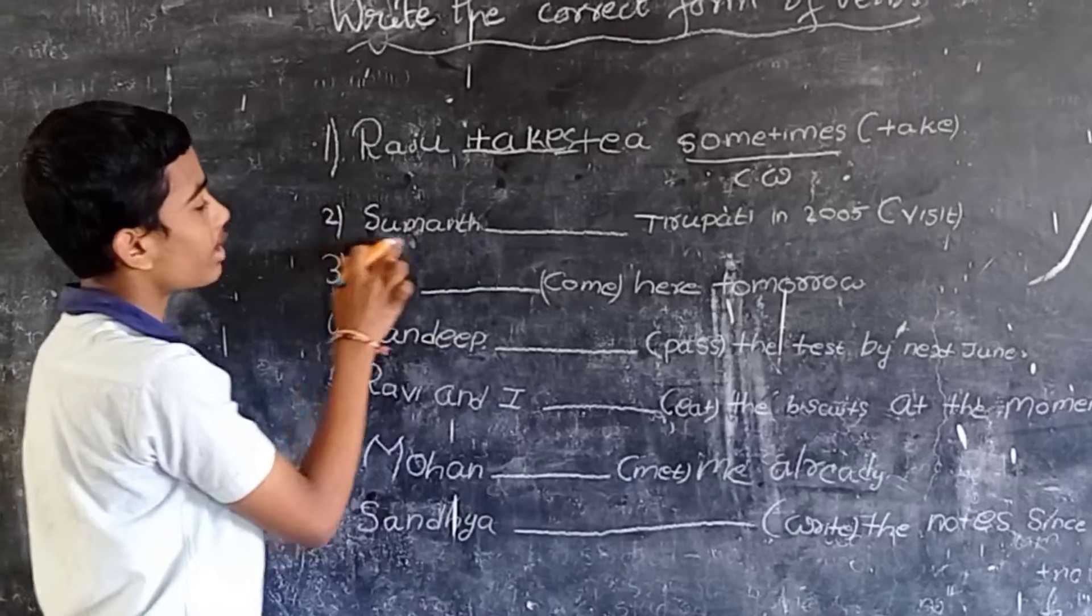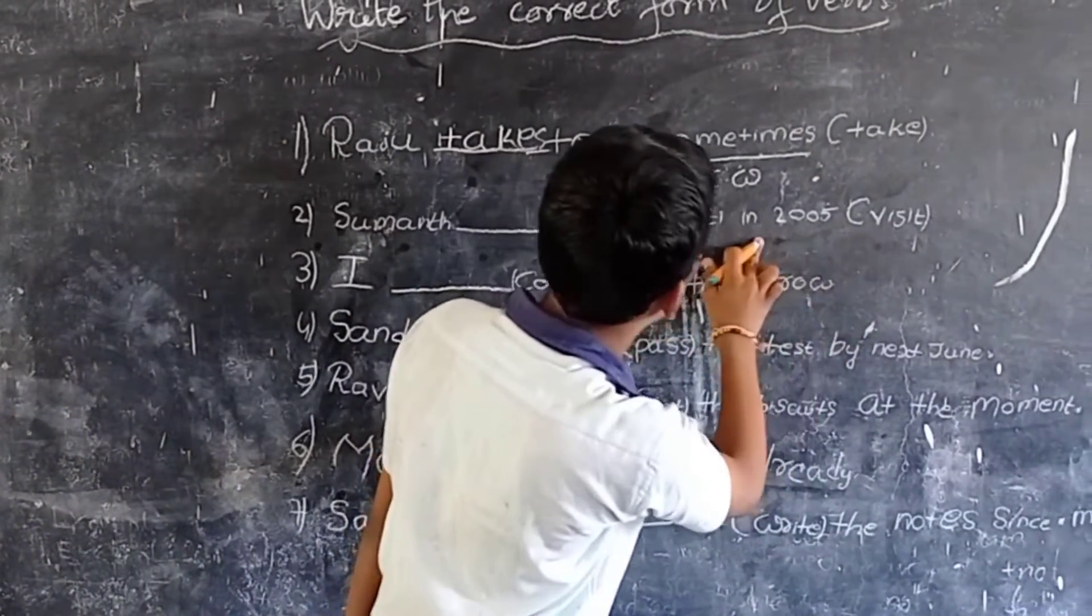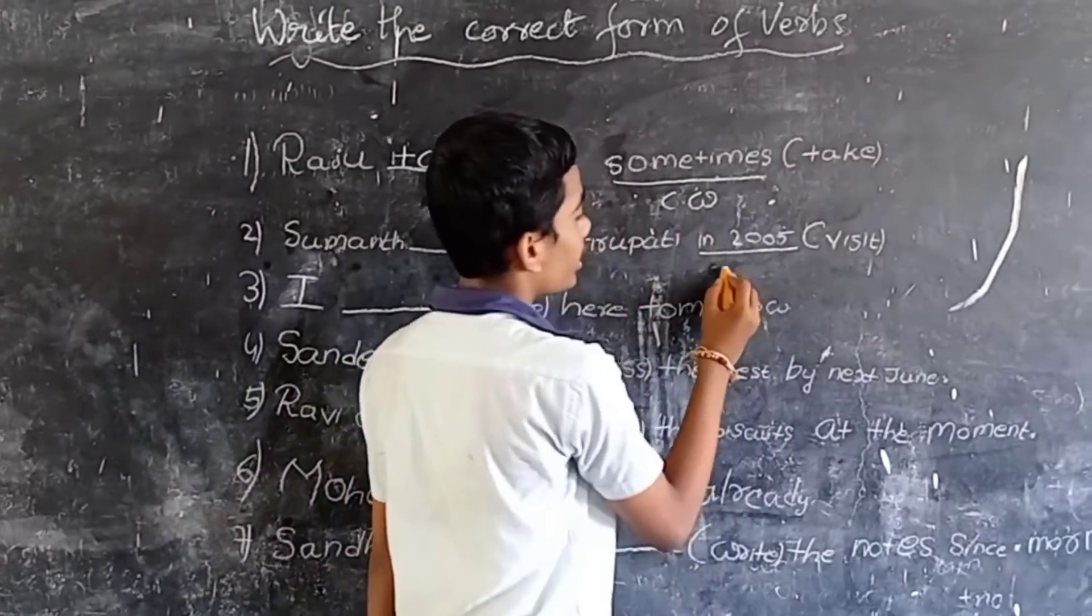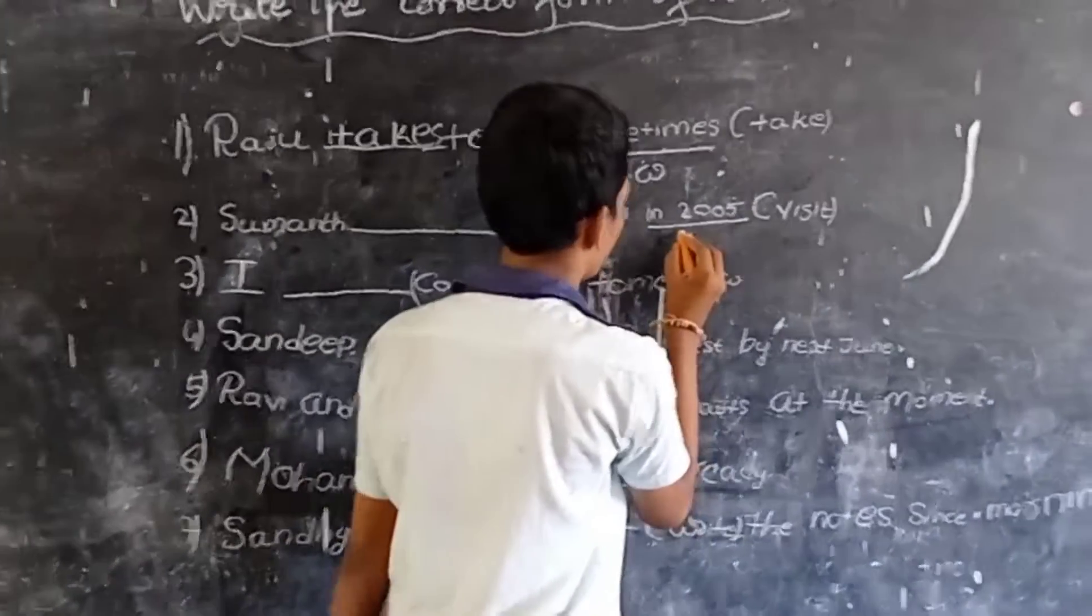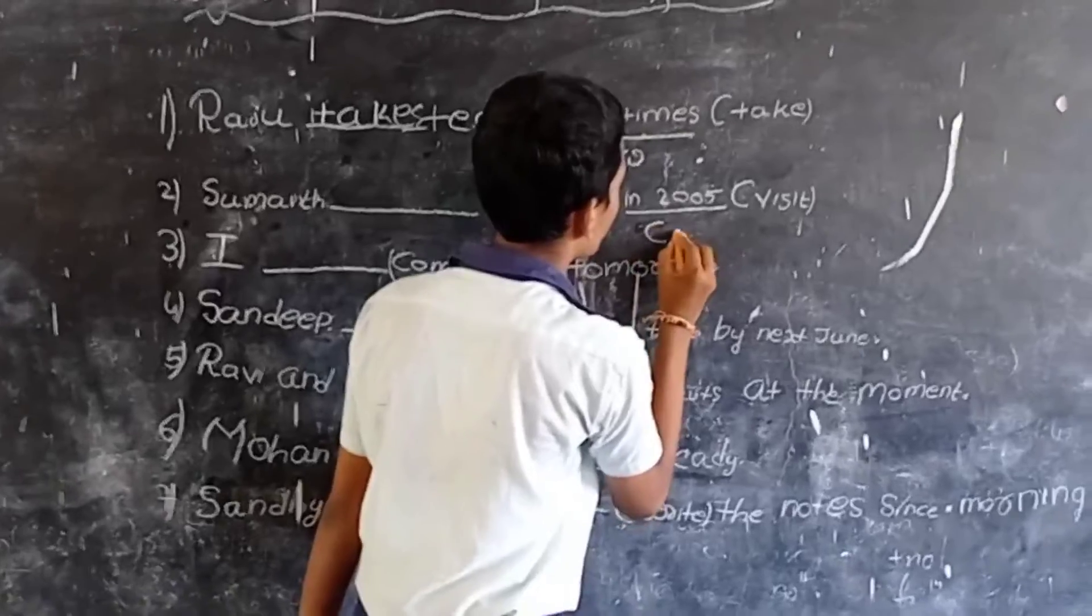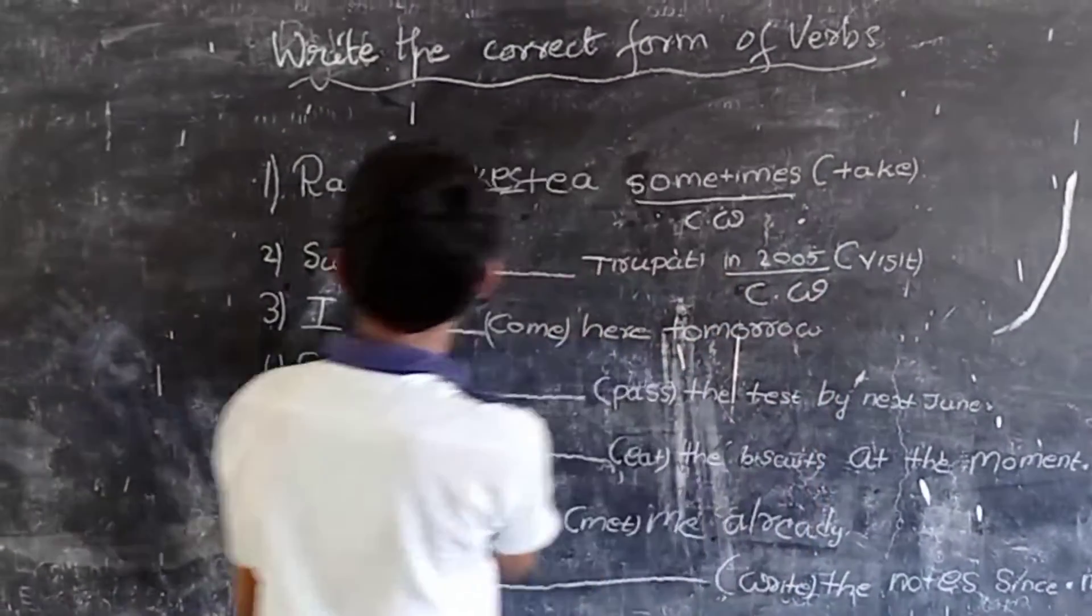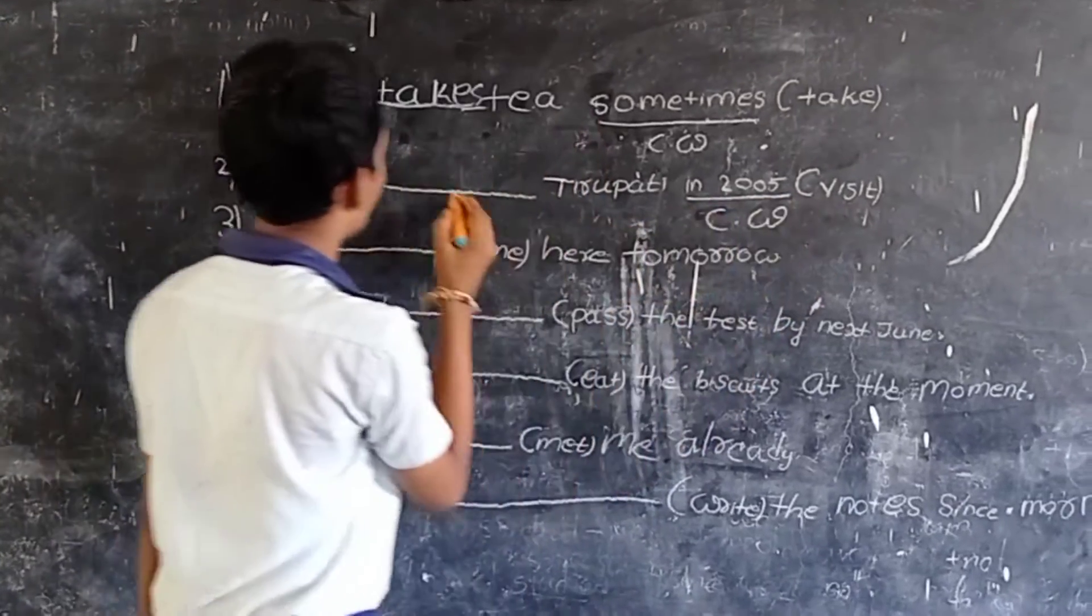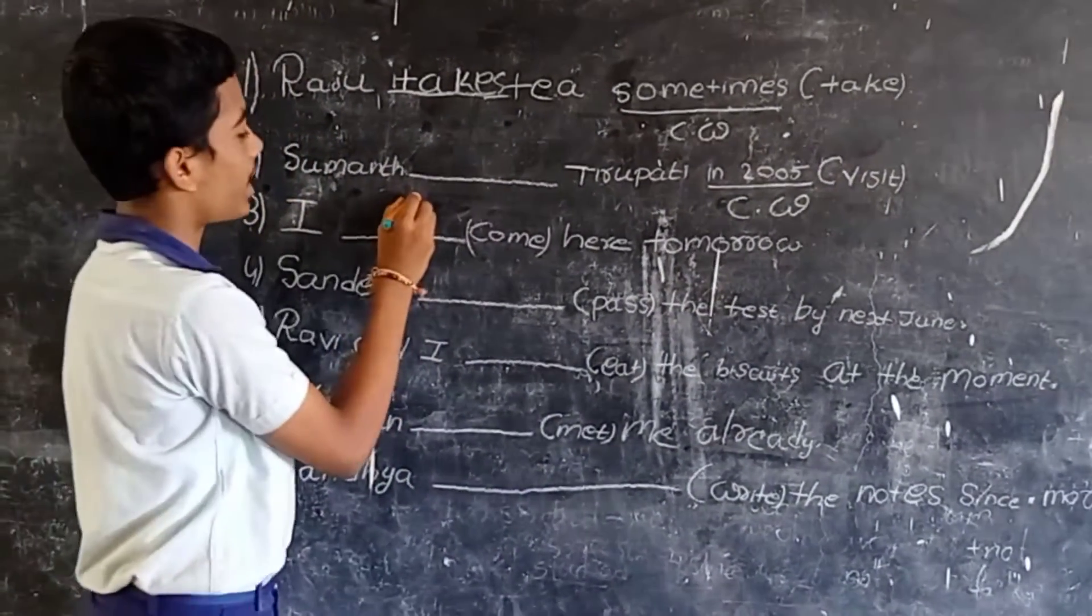The second example is: Suman visited Tirupati in 2005. Here, the clue word is in 2005. It belongs to simple past. So, we have to write, Suman visited Tirupati in 2005, which displays the past action here.